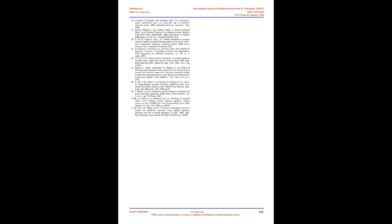Figure 13 shows the 7-level hybrid cascaded H-Bridge MLI hardware circuit. Figure 14 shows the gating signals for switches S1–S4 obtained in the DSO. The HMLE circuit is wired and an input supply of 12V DC is supplied to the input terminals of the 89C51.